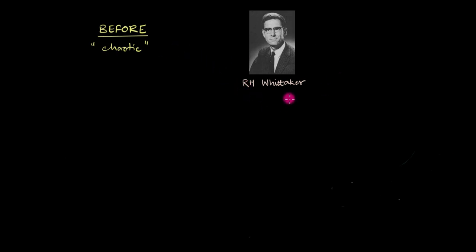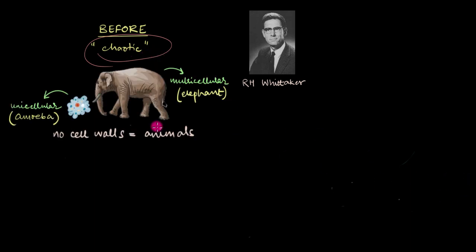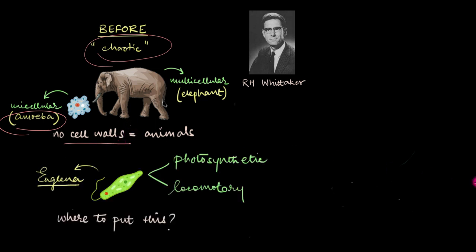Before Whittaker came up with the Five Kingdom classification system, things were very chaotic with some organisms. For example, unicellular eukaryotes like amoebas were placed with multicellular animals just because they didn't have any cell walls. And then there were some organisms that weren't given a place at all. One of them was euglena, an organism that can photosynthesize like a plant and move like an animal, and because of this, nobody knew exactly where to put this organism at all.